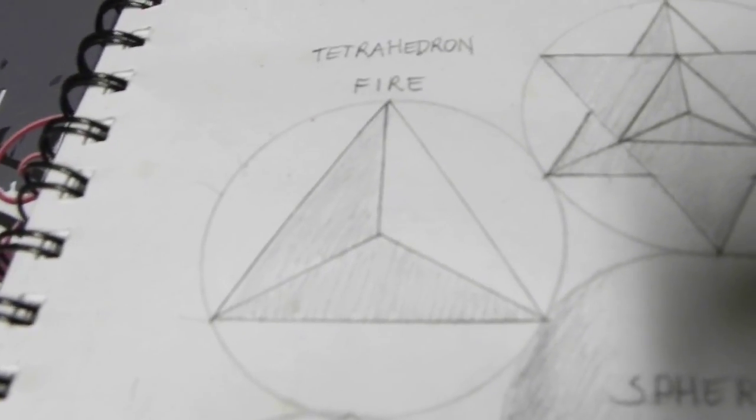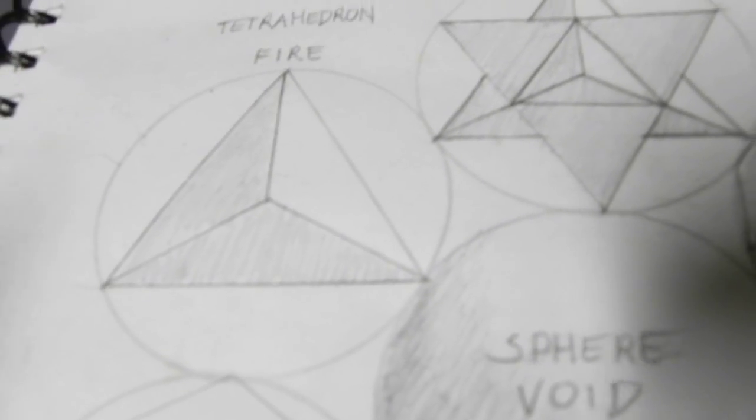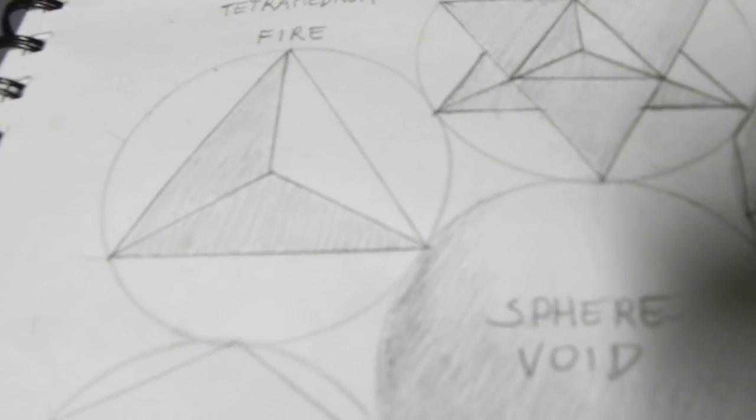The next one I want to talk about is the tetrahedron. This one represents fire. This one is your standard tetrahedron. It's just like basically a 3D triangle. It's this little guy.